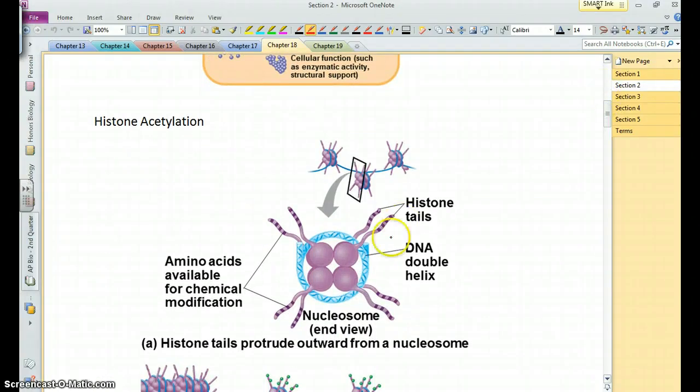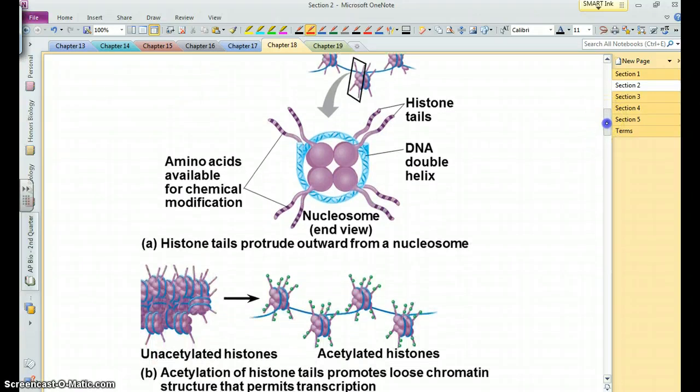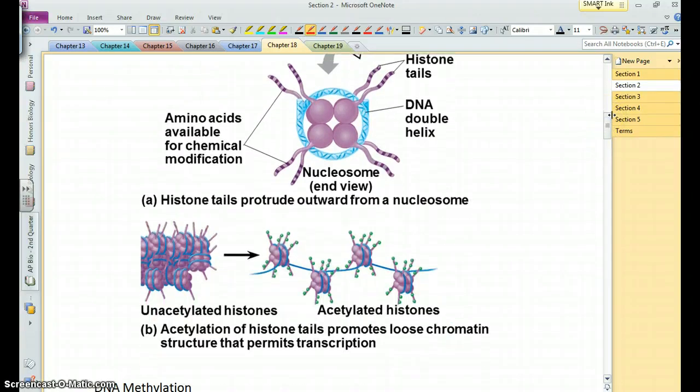Histone acetylation. You'll remember histones are the proteins that the DNA are wrapped around when they form these tight, highly condensed chromosomes. Well, when you add acetyl groups to the histones, the histones have these little tails that stick off the side. It prevents the histones from clustering together, and so the DNA is spread out, and it's easier to transcribe in that state. So histone acetylation opens up the DNA and makes it available for transcription.